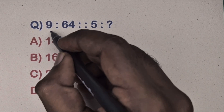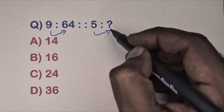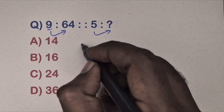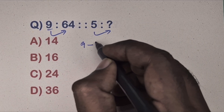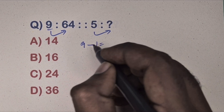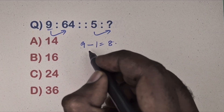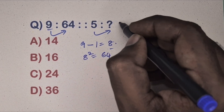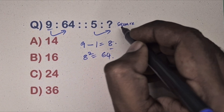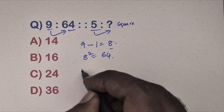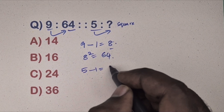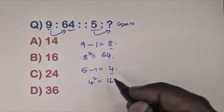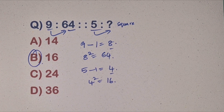Next question: 9 is related to 64, and 5 is related to which number? Options are given. Take 9 — write as 9 minus 1 equals 8. This is a square relation: 8 squared equals 64, and 64 is there. Same way, take 5 — 5 minus 1 equals 4, and 4 squared equals 16. So option B is the correct answer.